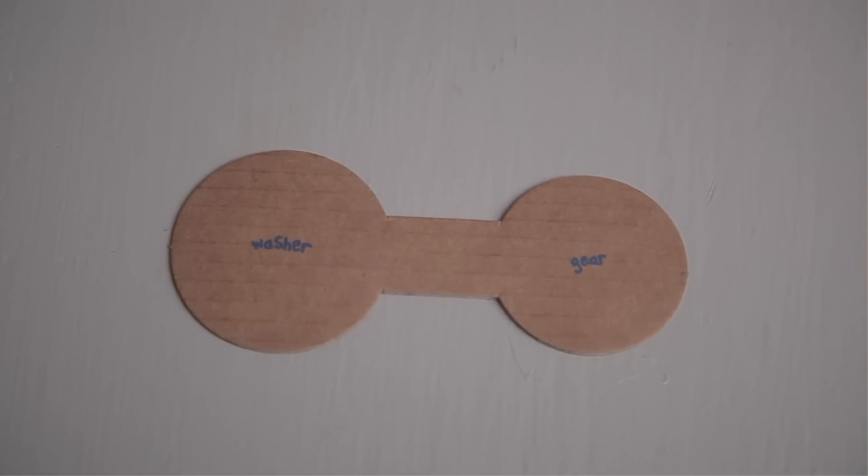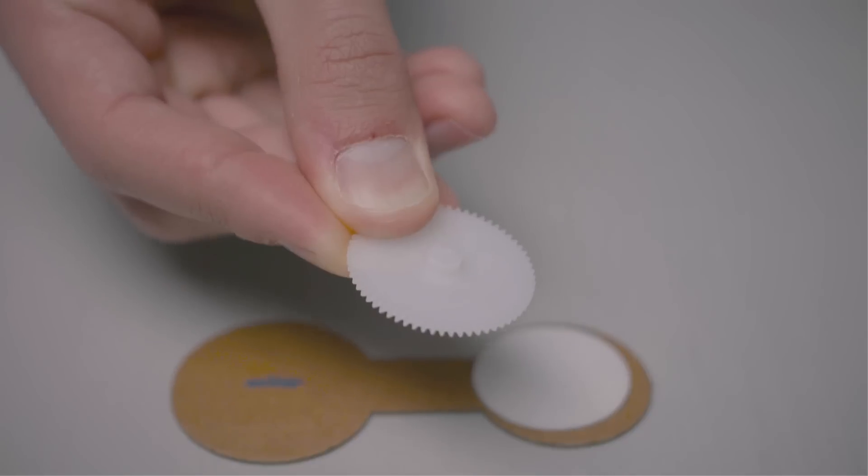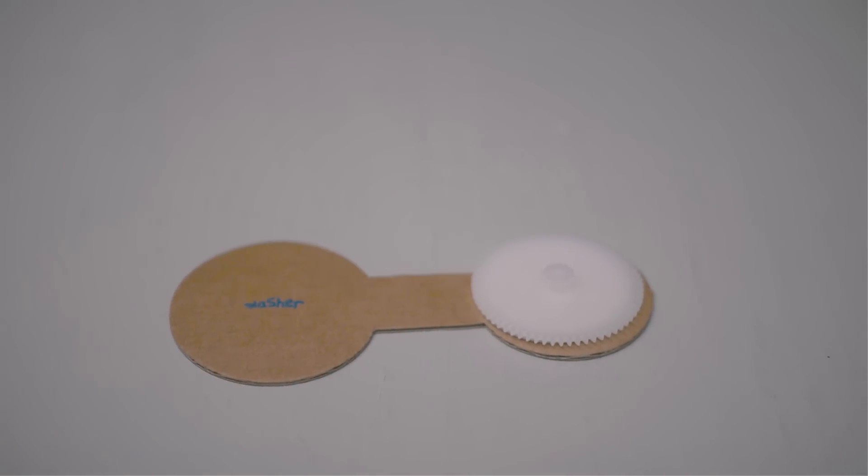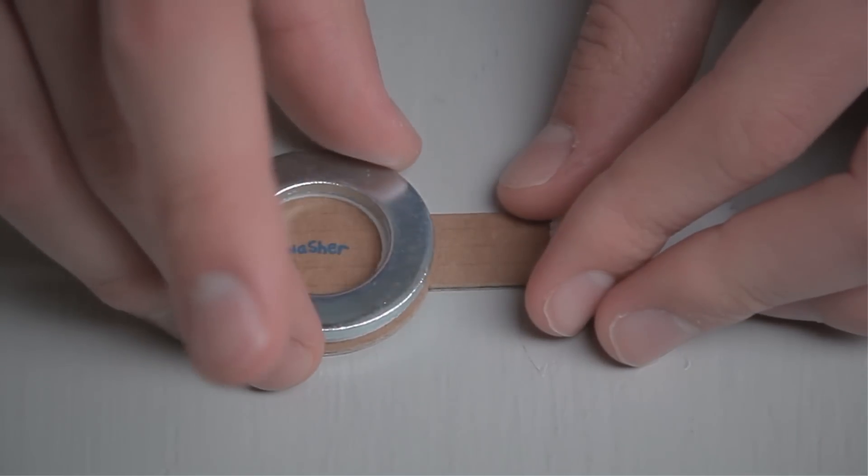Now let's build your spinner. Stick the foam disc to the small end of the spinner piece, then stick the gear on top of that. Stick the foam donut to the larger end of the spinner piece, then stick on a washer.